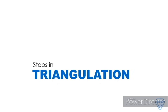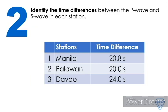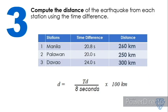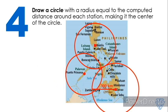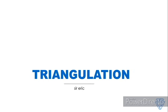So the steps in triangulation are: Number 1, have three different seismic stations. Number 2, identify the time difference between the P wave and S wave at each station. Number 3, compute the distance of the earthquake from each station using the time difference. Number 4, draw a circle with a radius equal to the computed distance around each station, making it the center of the circle. Number 5, the epicenter of the earthquake is where the three circles intersect. And that is triangulation.